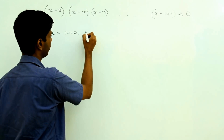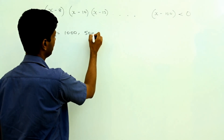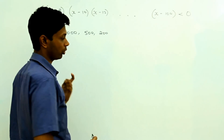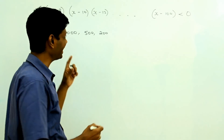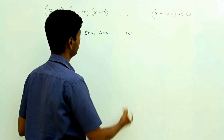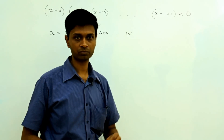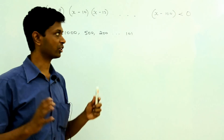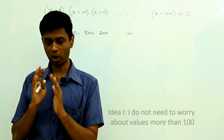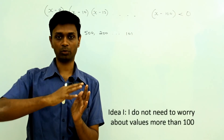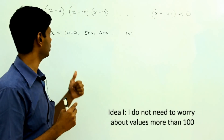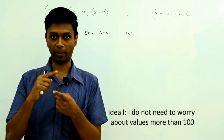So the product of all these terms will be positive because each term is positive. I know x equal to 1000, 500, 200 — anything up to 101 — each of these terms is positive so the product has to be positive. Straight away I only have to worry about numbers less than 101, which practically means integers from 1 to 100. That is a big step.